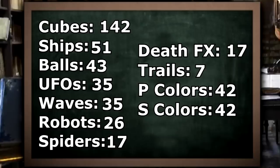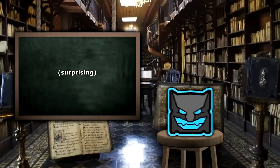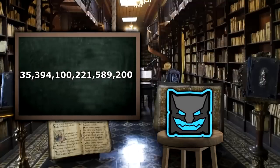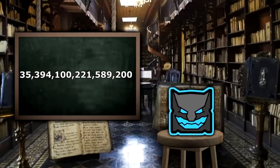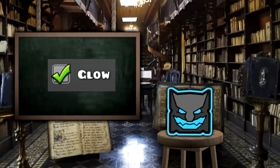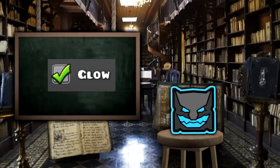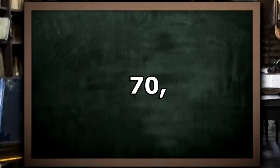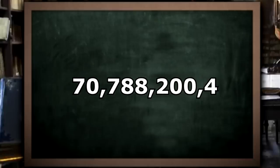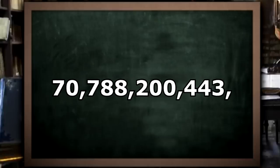And it is — bam — pretty big number, right? Wait, there's more. We almost forgot the glow. To calculate that, it's pretty simple: we will just double the whole thing, giving us a total of 70 quadrillion, 788 trillion, 200 billion, 443 million...